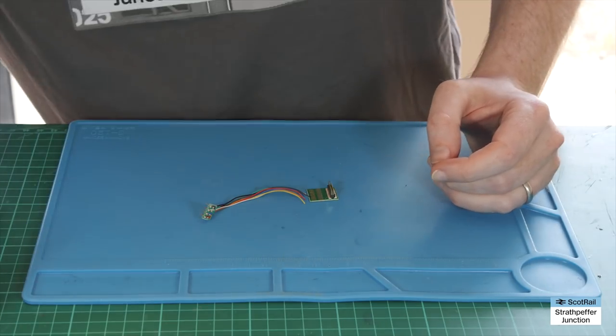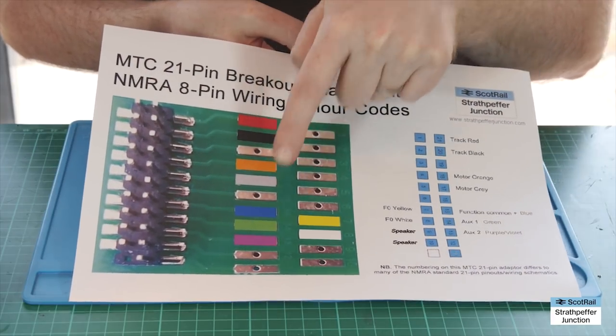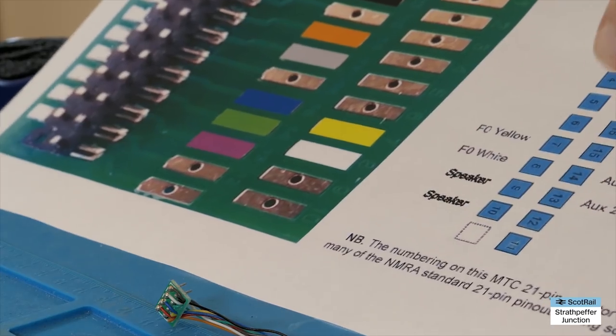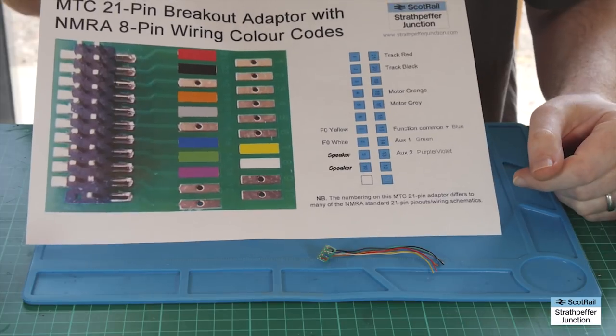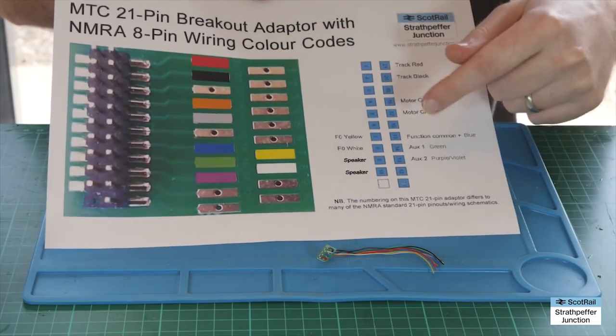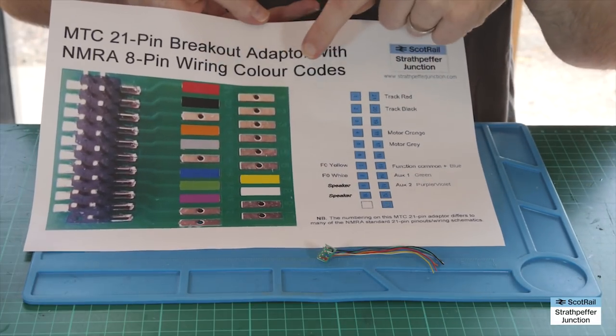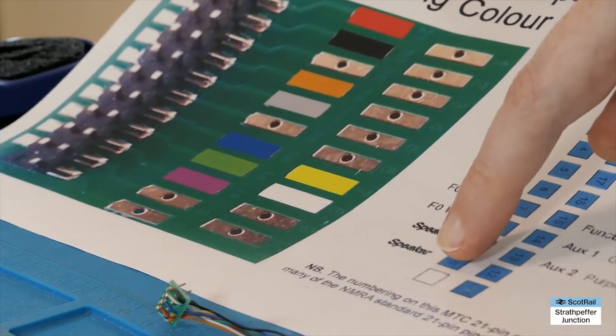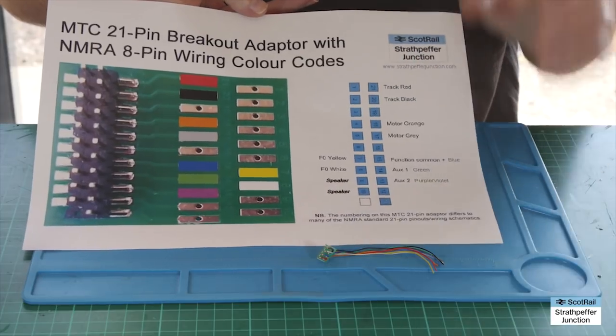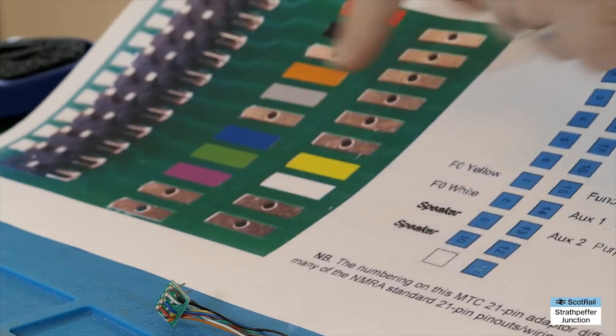It's a fairly straightforward process. To aid us in this tutorial, I've done a breakout and wiring diagram which shows the solder tabs and color coordinates them with the wires on the 8-pin loom. One thing to mention is that on this particular MTC breakout adapter, the pins are numbered slightly different because number 11 isn't numbered - it's the blank pin position. On other diagrams, the blank pin is number 11, so everything that follows is different. As long as you stick with the numbering on this diagram, you can't go wrong. We'll follow this diagram, strip back the wires, solder them on, and that's literally job done.